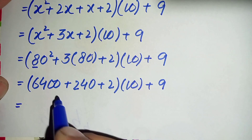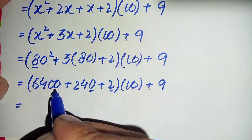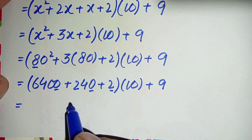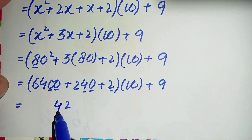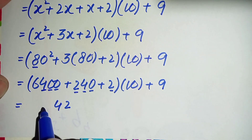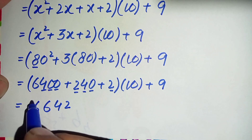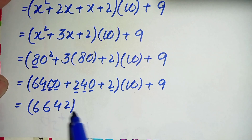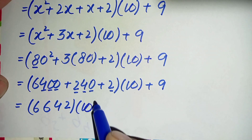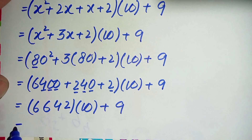Adding the numbers: 2 plus 0 plus 0 is 2; 4 plus 0 is 4; 2 plus 4 is 6; and this gives 6. So the sum of these three numbers gives 6642. Then times 10, plus 9.